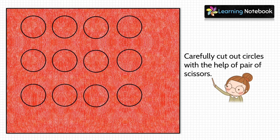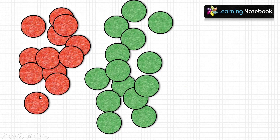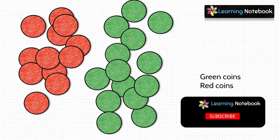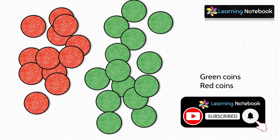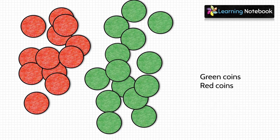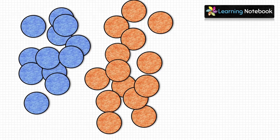Then carefully cut out these circles using a pair of scissors. Here I have made some coins which are green on one side and red on the other side. In the same way, let's make a few more coins which are blue on one side and orange on the other side.